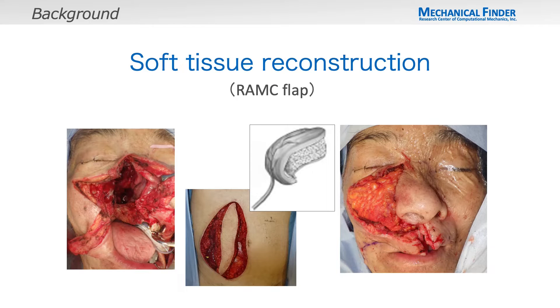Soft tissue reconstruction involves designing a free flap to match the volume of the defect tissue and filling it with skin, fat, or muscle.